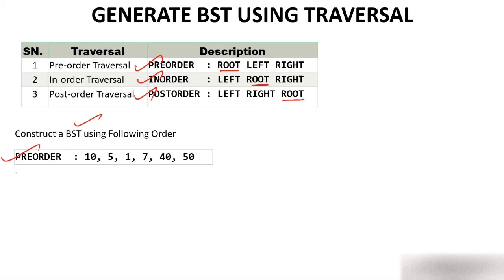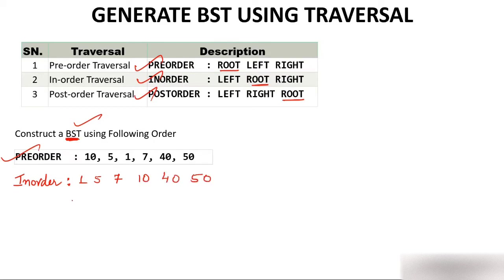If in-order is not given, do not panic. Just write the in-order yourself. Remember: the in-order traversal of a BST is always in ascending order. So what is the ascending order of these numbers? 1, then 5, then 7, then 10, then 40, then 50. So the in-order traversal has already been calculated. Now you have two traversals: in-order and pre-order, and you know the method.